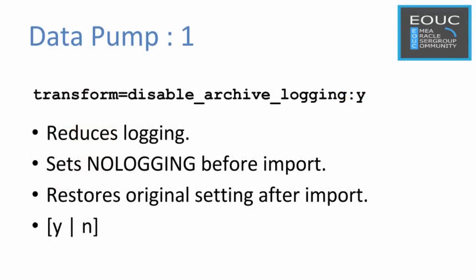The transform parameter has been extended to include disable archive logging. When enabled, this sets no logging for the segment before the import and then switches back to the original setting after the import is complete.